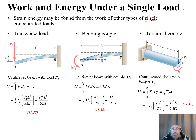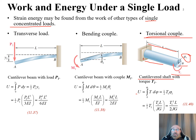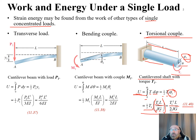For a torsional couple T₁ on a cantilevered shaft of length L and angle φ₁, the strain energy U equals the integral from 0 to φ₁ of T dφ, giving one-half·T₁·φ₁. Substituting φ₁ equals T₁·L/(JG), where J is the polar moment of inertia and G is the modulus of rigidity, and simplifying gives U equal to T₁²·L/(2JG), which is equation 11.40.